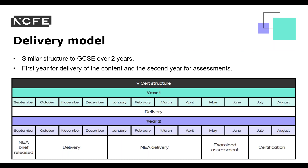This slide shows a typical two-year delivery model. This is only a suggestion to help illustrate the new structure so you can visualise how it is going to work for you. It essentially follows a very similar structure to that of a GCSE. The first year is for delivery where there are no summative assessments, and the second year is the assessment year. It has been designed this way to allow the first year of delivery to be focused entirely on teaching the content, building up learners' knowledge and skills.